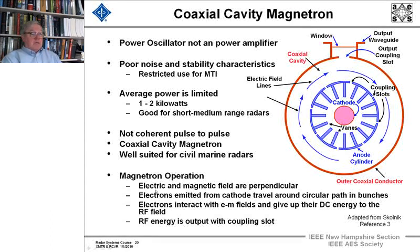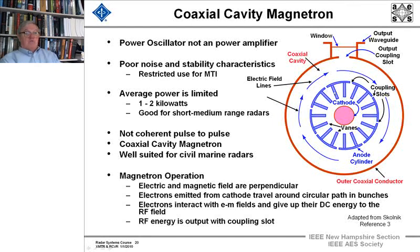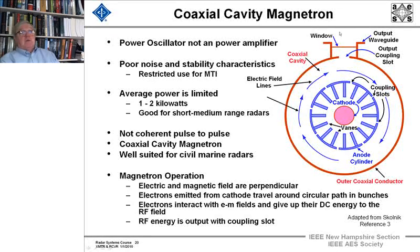The way magnetrons work generally is you have electric and magnetic fields that are perpendicular. Here are the electric field lines, and perpendicular coming out would be the magnetic field lines. The electrons emitted from the cathode travel around a circular path in bunches. The electrons interact with the electromagnetic fields and give up their energies to the RF field. The output goes onto a coaxial connector, with a window between the coax and the waveguide output.